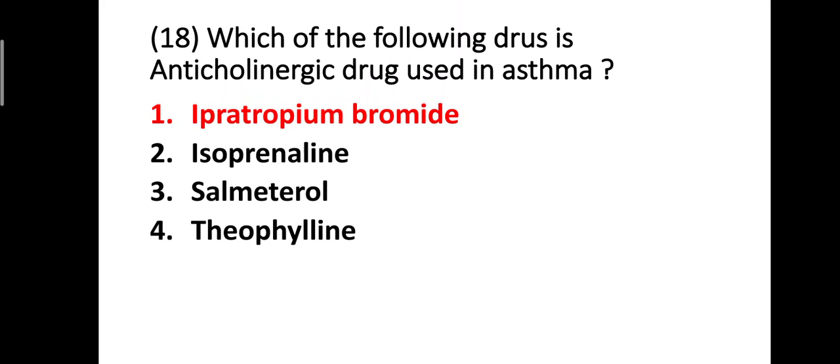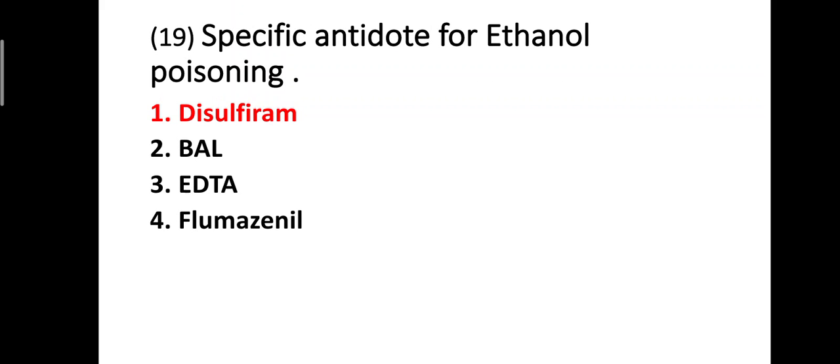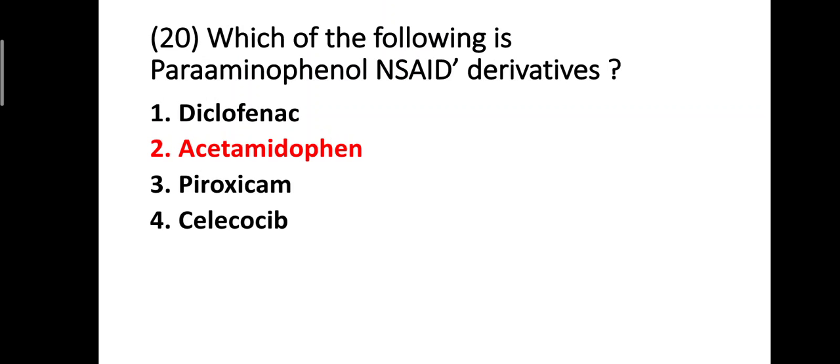Question nineteen: specific antidote for ethanol poisoning — option one: disulfiram, option two: BAL, option three: EDTA, option four: flumazenil. The correct answer is option one — disulfiram is the specific antidote for ethanol poisoning.